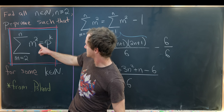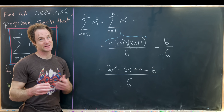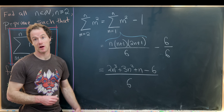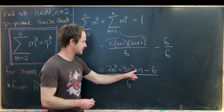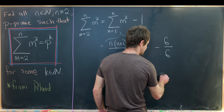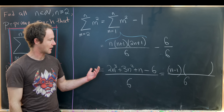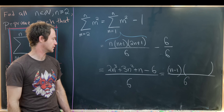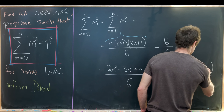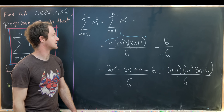Since we're trying to write this as a power of a prime, it stands to reason that this numerator probably factors — if it doesn't, there's probably not enough structure to answer the question. If it factors, it probably has a natural number as a root. Notice that 2 + 3 + 1 − 6 = 0, which tells us that 1 is a root, so we should be able to write this as (n − 1) times some quadratic polynomial, all over 6.